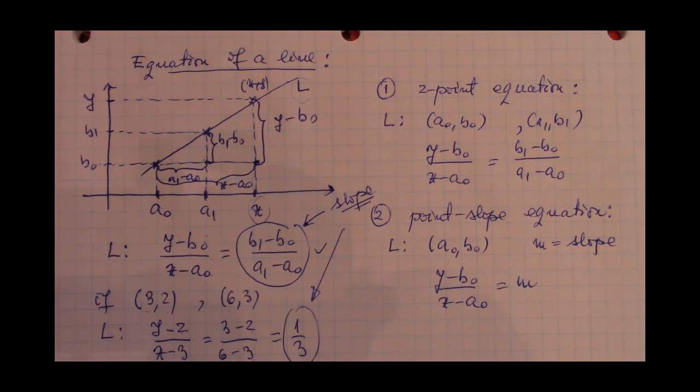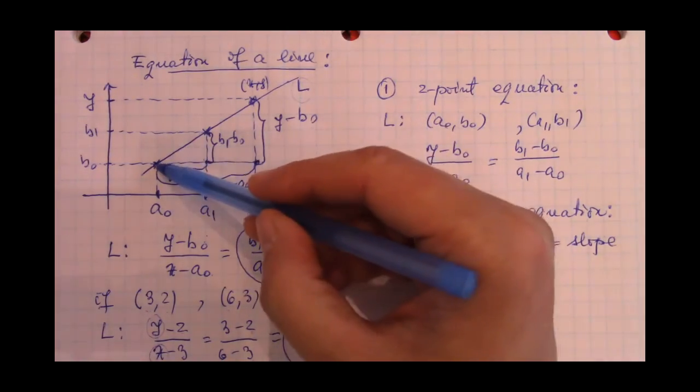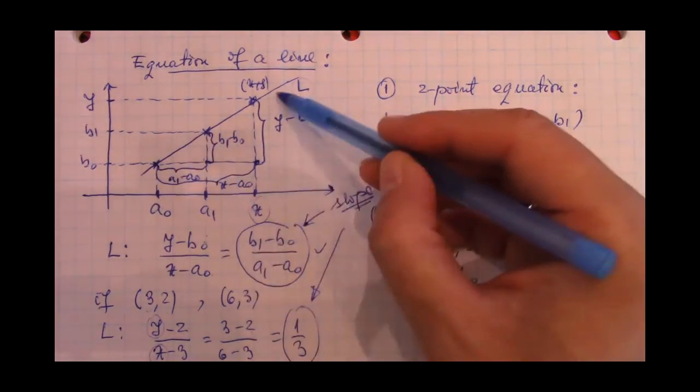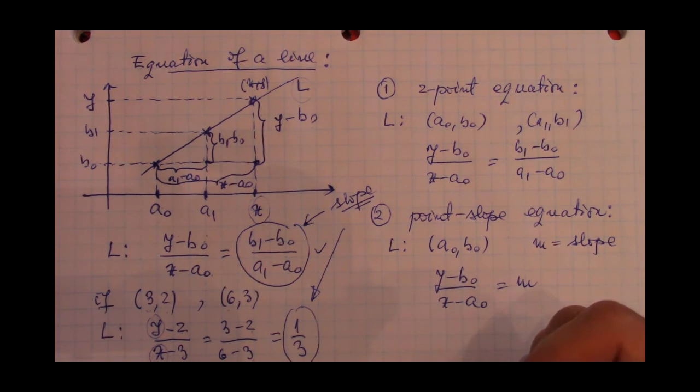And actually, if you look at this particular equation, we can see maybe better than in this slightly more generic equation that the equation of the line really depends on the coordinates of this generic point. The coordinates of the two points that actually determine the line are numbers and we can just plug them in and we get actual numbers.